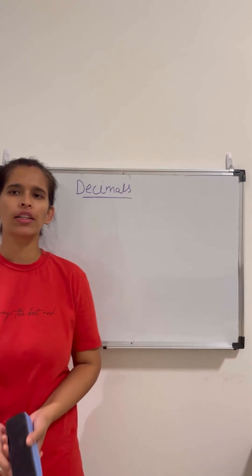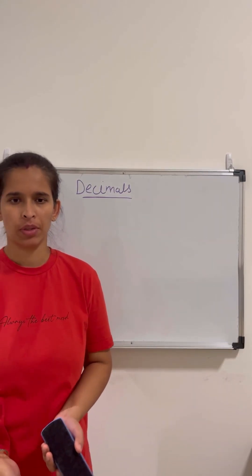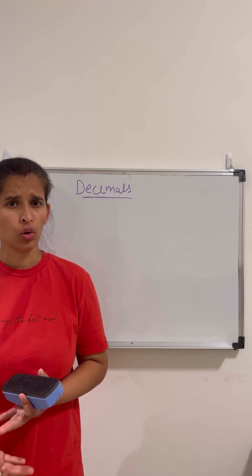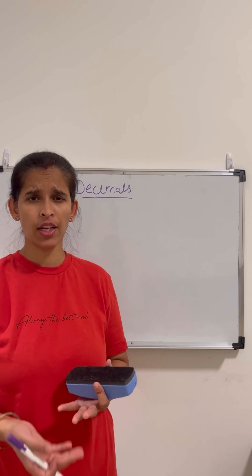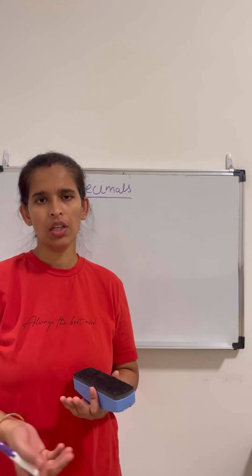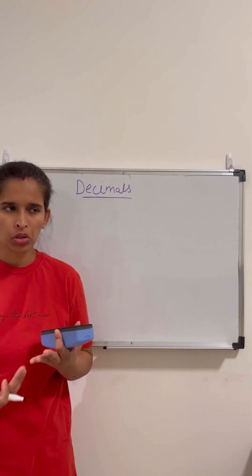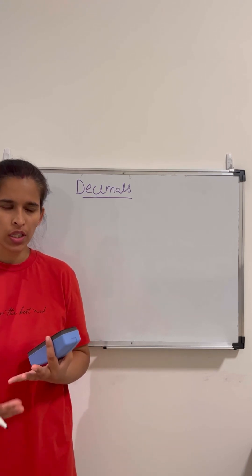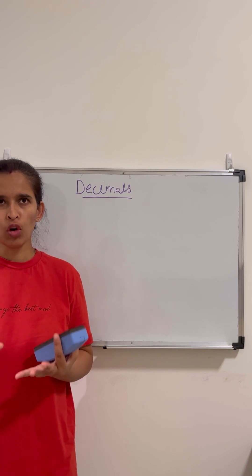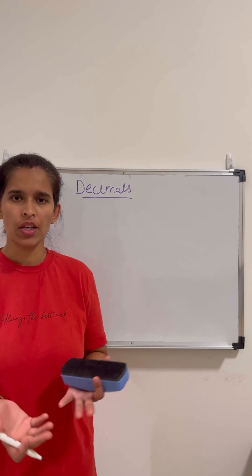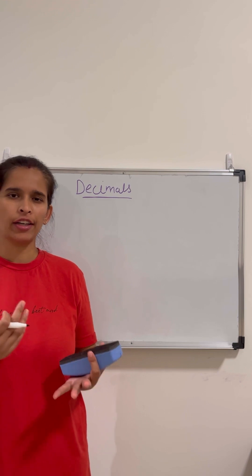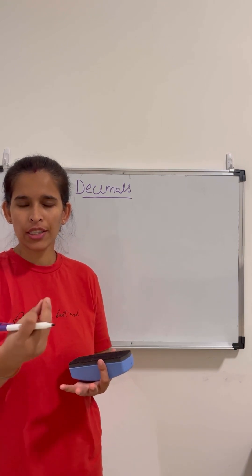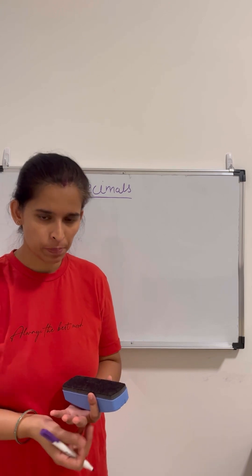Hello everyone, today we learn about decimals. What is a decimal? A decimal is a way of writing a number that is not whole. Suppose I have to write a number between five and six, then we use a decimal. Decimals are used in situations where more precision is required, for example in terms of height or in terms of money.